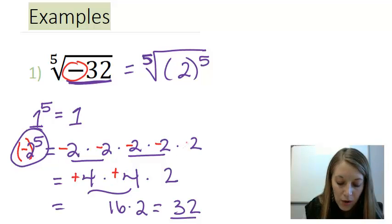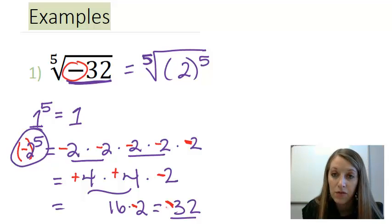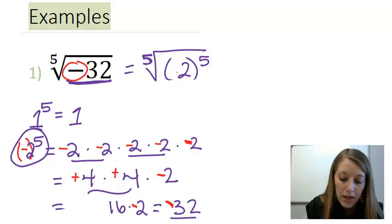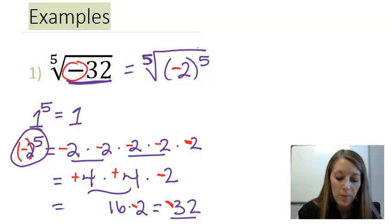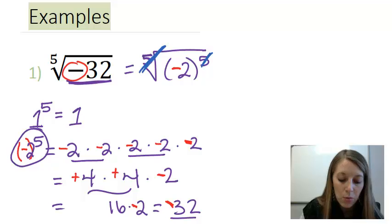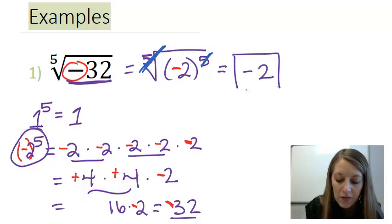Positive four times positive four, but I still carry down this negative with this two. So, positive 16 times negative two gives me negative 32, which gives me the right answer. So, negative two times itself five times gives me negative 32. And that's exactly what I was looking for. So, now my fifth power and my fifth root cancel out, and we're left with just the base on the inside, which gives me negative two.